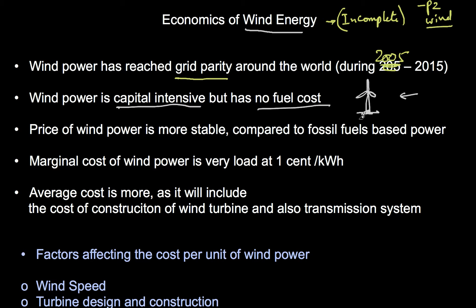The problem is the capital cost of the turbine itself. The price of wind power is more stable compared to fossil fuel-based power because the cost of wind is zero. The cost of fossil fuels varies - sometimes $100 a barrel, sometimes $40, sometimes $180. As fuel prices change, the cost of fossil fuel power changes too, whereas the price of wind power remains more stable. The marginal cost of wind power is very low.